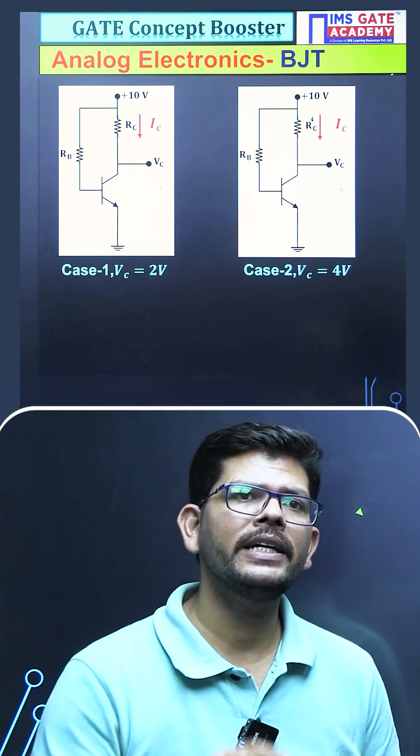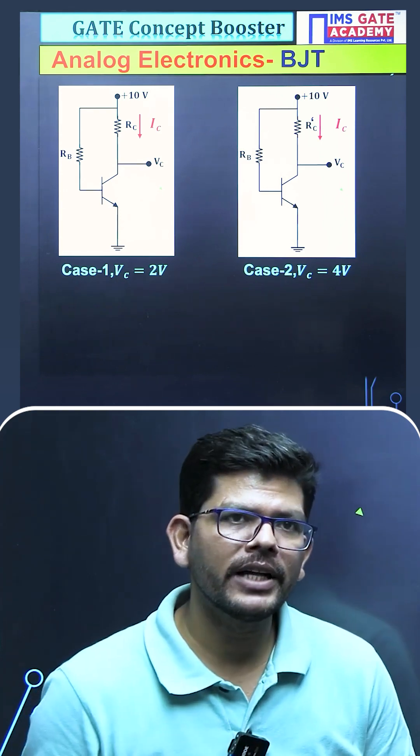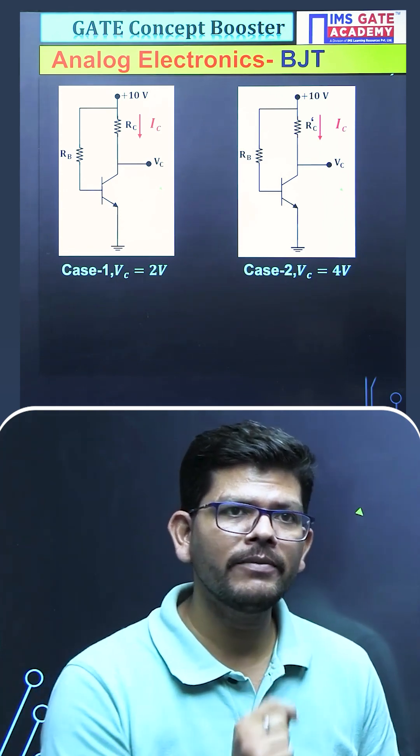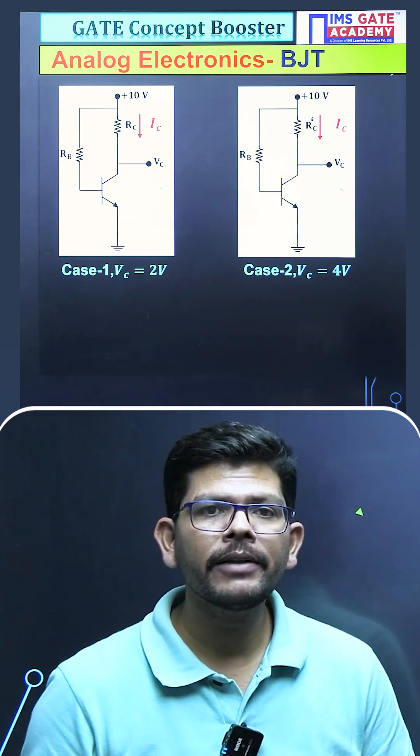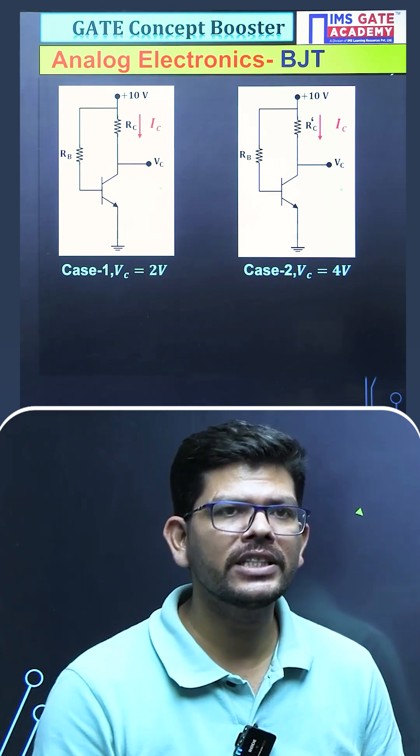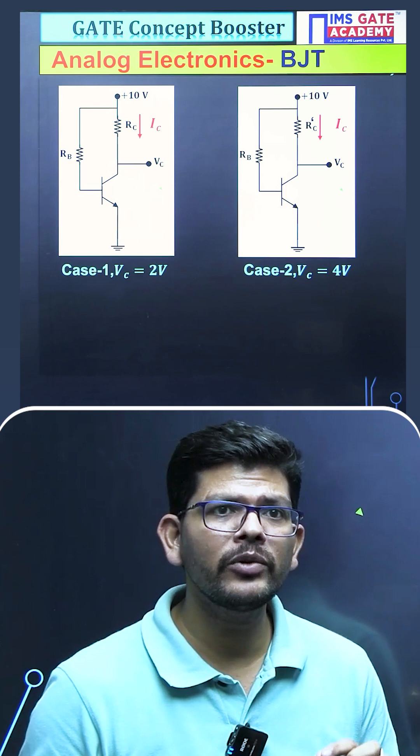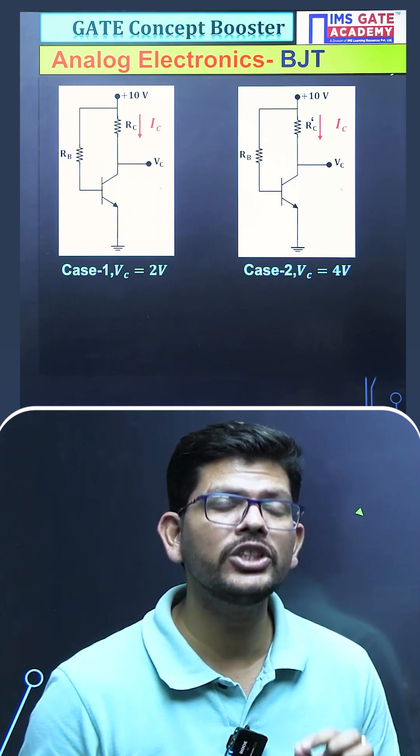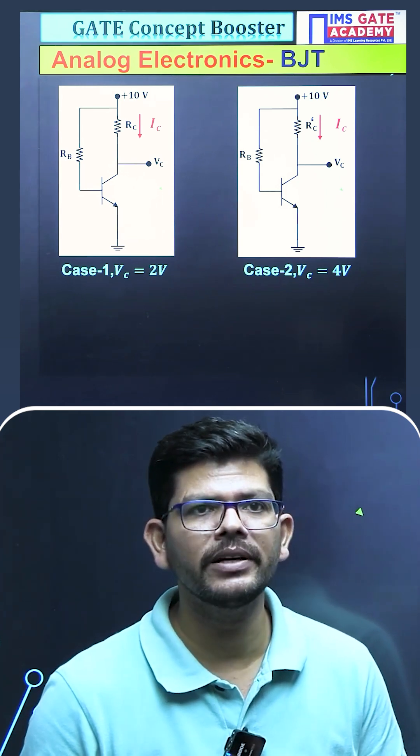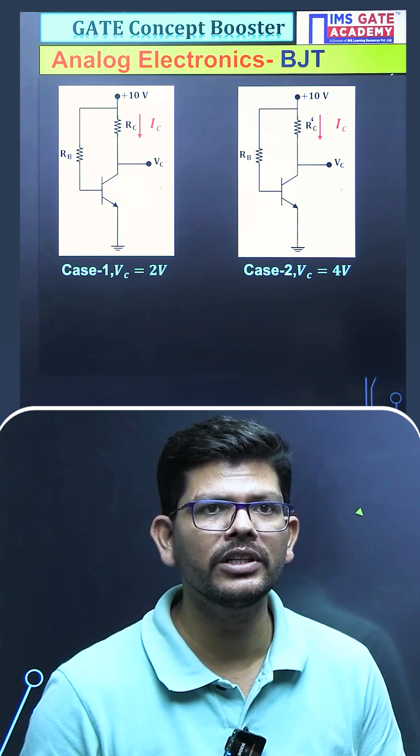Just apply KVL in this particular branch where you have been given the supply voltage VCC which is 10V. The VC is changing and the resistance is changing. So if we calculate the current flowing across RC or RC dash, which will be the same current in both situations as they have told,